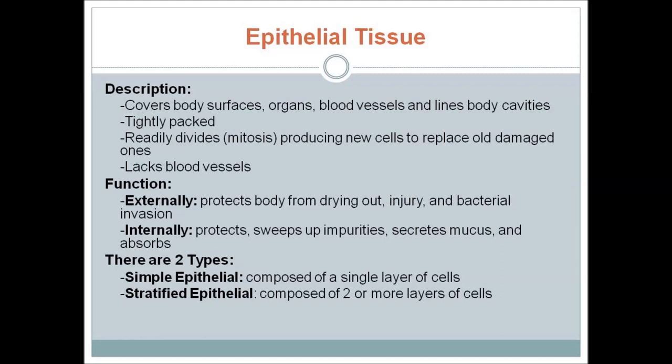Epithelial tissue readily divides, producing new cells to replace old or damaged ones, and it lacks blood vessels. Its function has two types: externally, it protects the body from drying out, injury, and bacterial invasion.